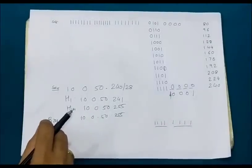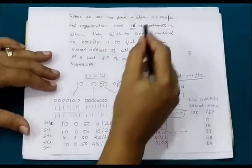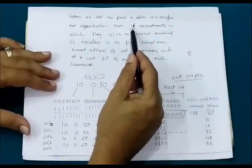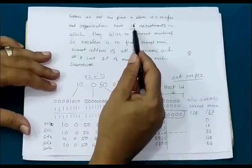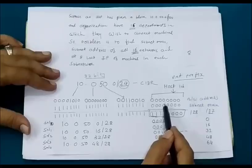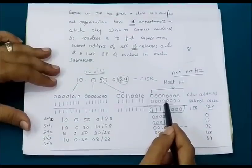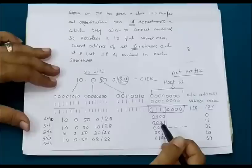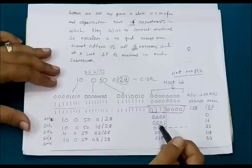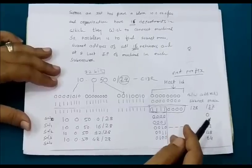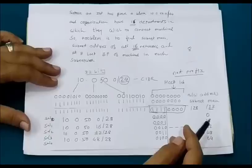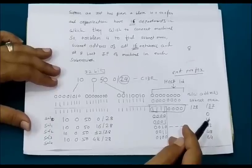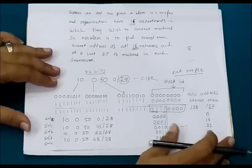To summarize: we were given the block 10.0.50.0/24 and asked to create 16 subnets. We took 4 bits from the host ID part, making the new mask /28, and were able to write the first and last IP of each subnetwork. Similar videos with more subnetting examples will be uploaded to help with exams like GATE or CCNA. Thank you for watching.